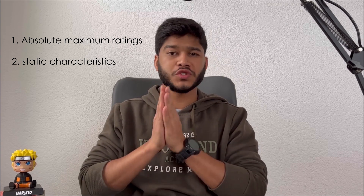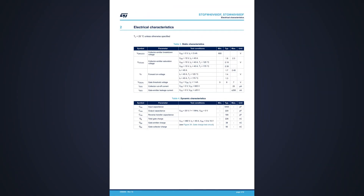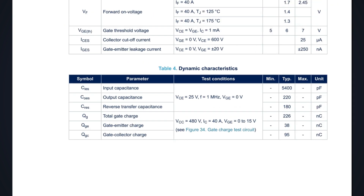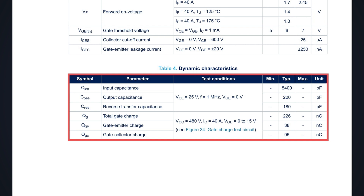Hello guys. Last time we saw the maximum absolute ratings and static characteristics of the IGBT, which are very important to select an IGBT properly. This time we'll check the dynamic characteristics of the IGBT, which are very dependent on the conditions that determine how we measure them. These are very helpful for switching applications and have a crucial role which determines how fast an IGBT can switch on or off. So let's start.